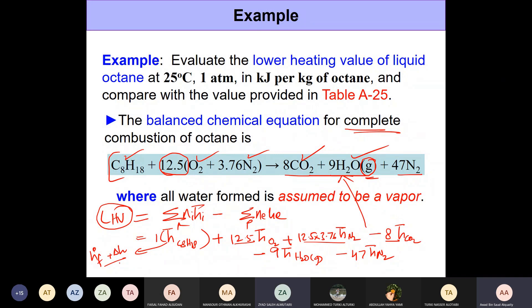Student question: Doctor we have 47 N2 in the reactants and in the products as well, can we cancel them out? Of course you can cancel them out because the reactants and products are supposed to be at the same temperature. We can go ahead and cancel them out. If the reactants and products were not at the same temperature then we would have to evaluate the enthalpies.